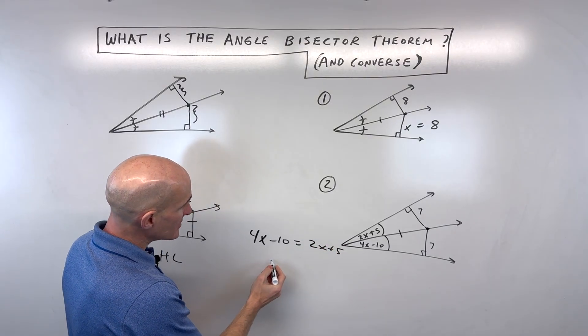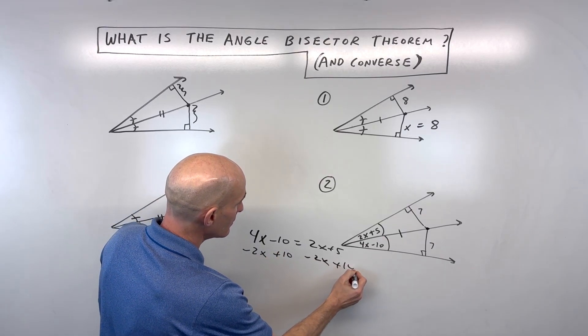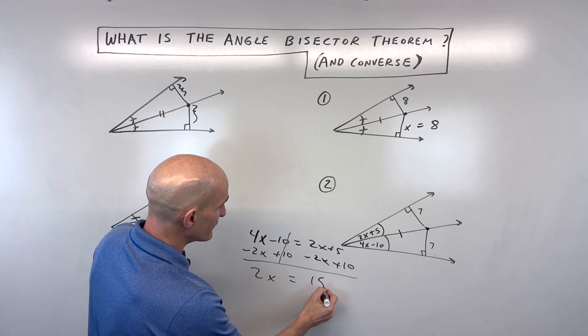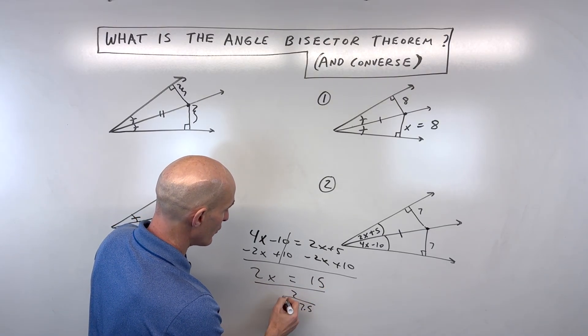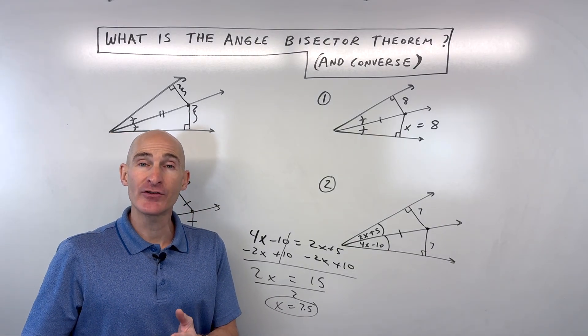So angle bisector theorem and the converse of the angle bisector theorem. So let's see, we're getting 2x is equal to 15, and if I divide both sides by 2, x is coming out to 7.5. So great job if you're able to follow the angle bisector theorem and its converse.